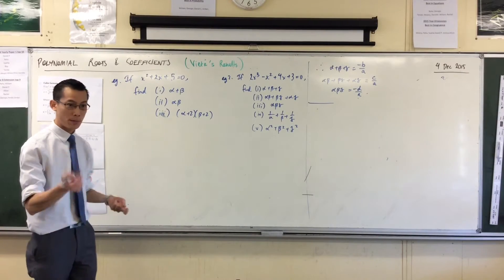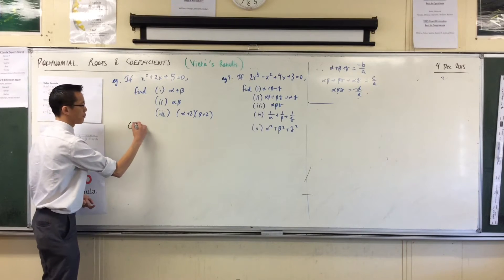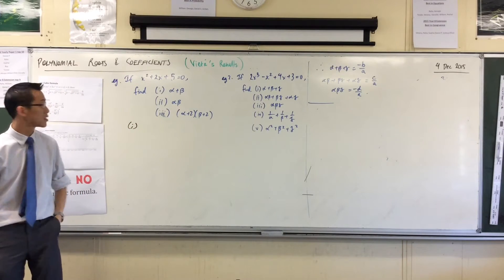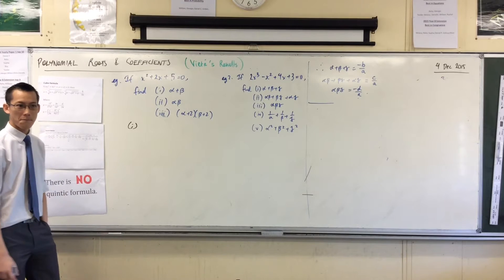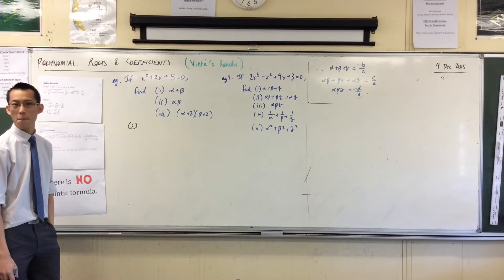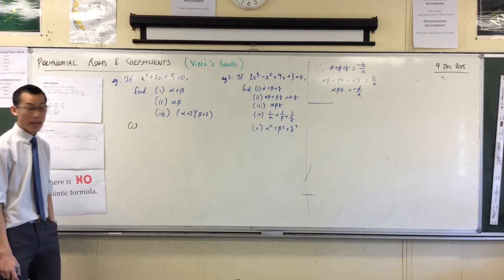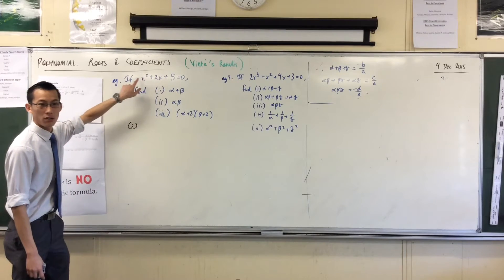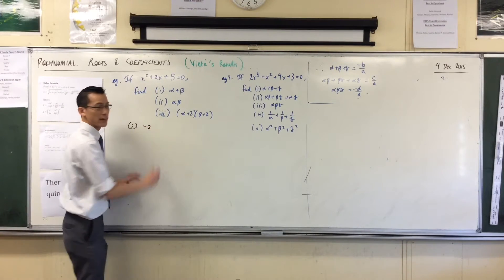So to begin with, for this example, let's just simply state what's the sum of roots in this case. Alpha plus beta is minus b on a, which is minus 2 on 1, so it's just negative 2.